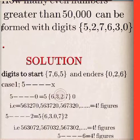The figures in the middle can be arranged in 4 factorial ways. So figures that start with 5 and end with 0 are 4 factorial, which is 4 times 3 times 2.